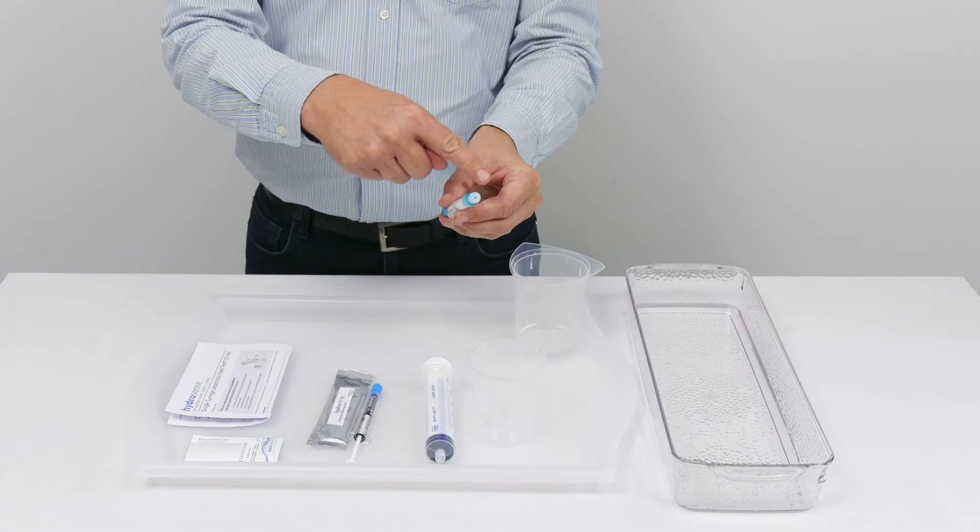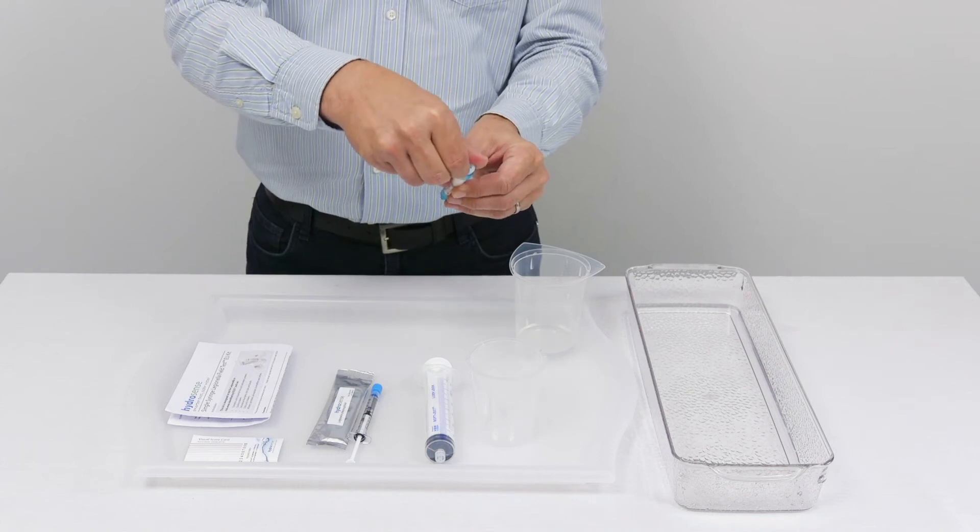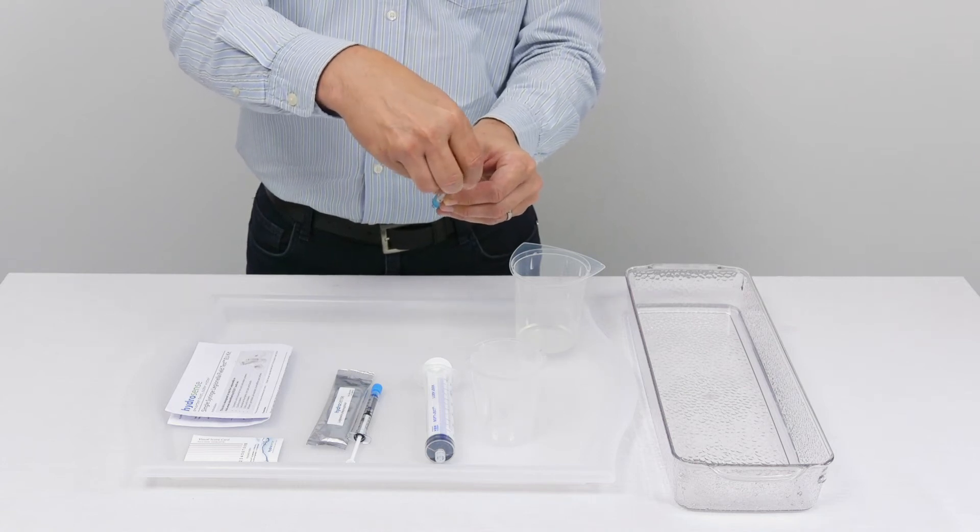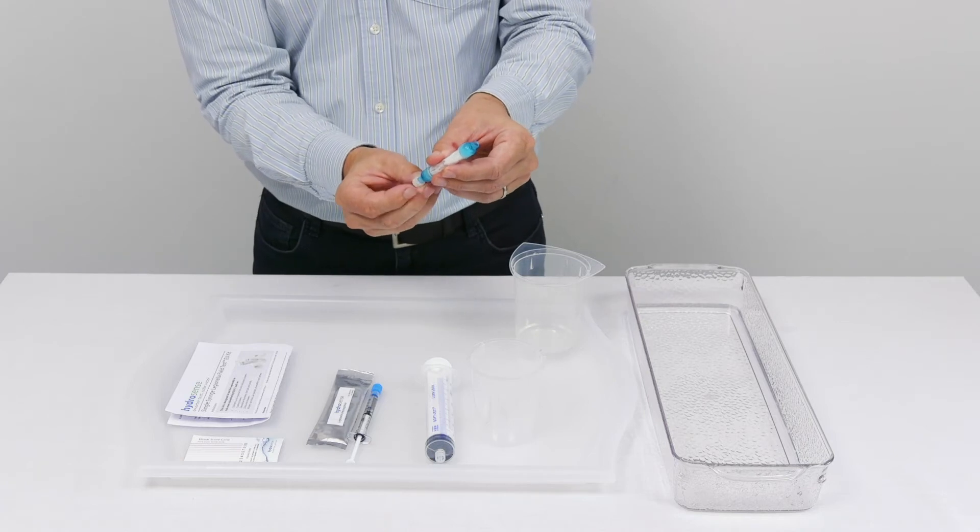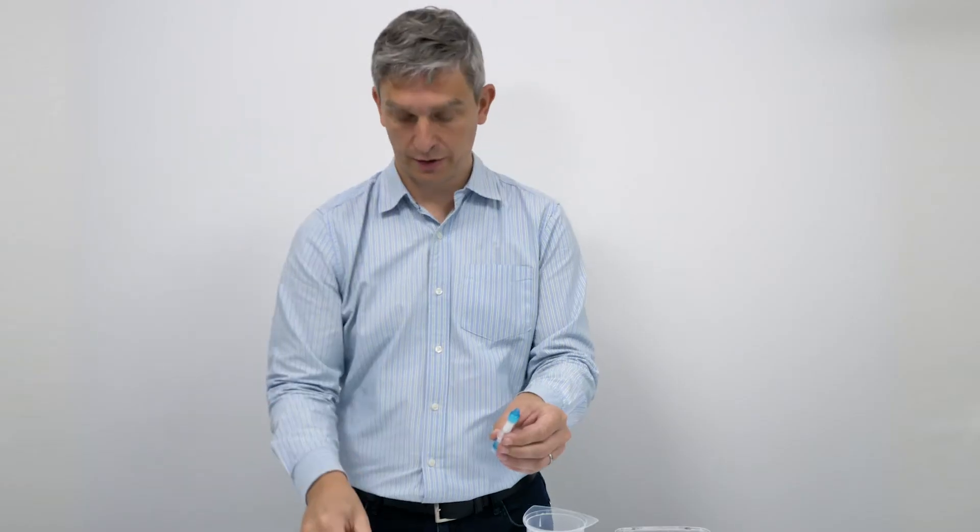The majority of the bacteria will be collected at the top end of the filter, so in order to maximize recovery, we take the top cap off, place it on the bottom, and then get access to the samples that are at the top.